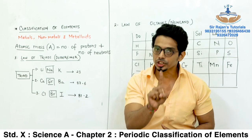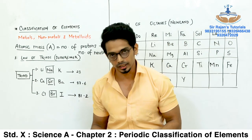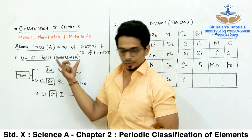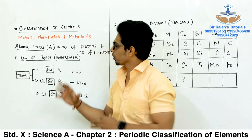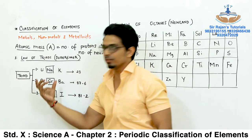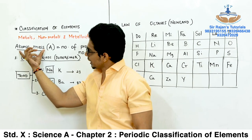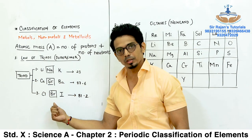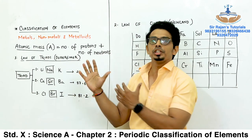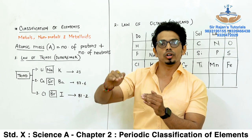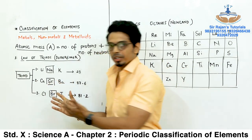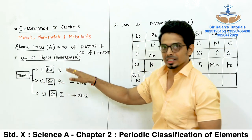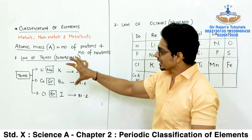Dobereiner wasn't the first one to classify — there were many other scientists — but the most promising results at that point of time were done by Dobereiner. Since atomic mass was taken as the source for relating the properties of elements, whatever elements he knew at that time were arranged in increasing order of atomic masses. The first element which comes into picture is always hydrogen because the atomic mass of hydrogen is 1, and then slowly he started putting the elements in increasing atomic mass.